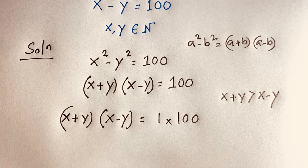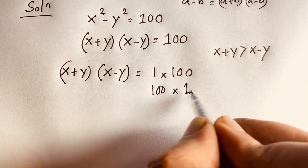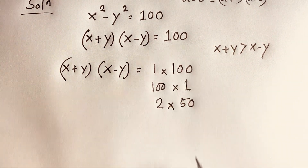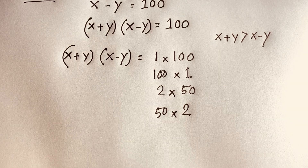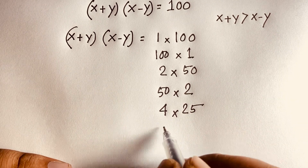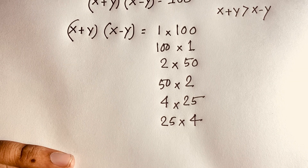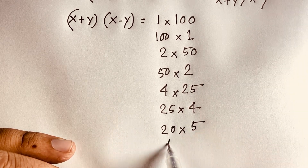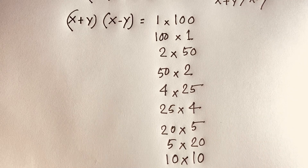The factor pairs of 100 are: 1 times 100, 2 times 50, 4 times 25, 5 times 20, and 10 times 10. These are all the ways to express 100 as a product of two positive integers.